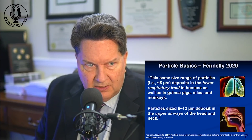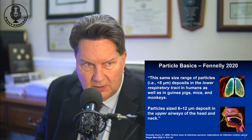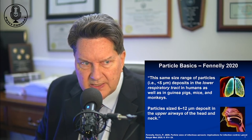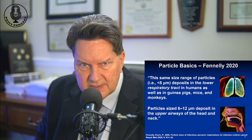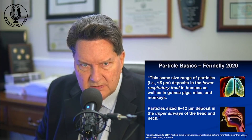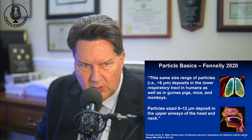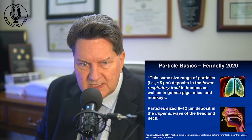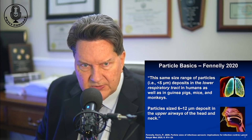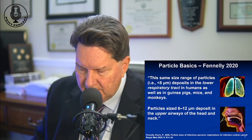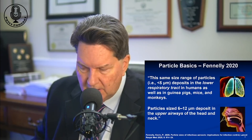Particle sizes less than a micron deposit in the lower respiratory tract in humans as well as guinea pigs, mice, and monkeys. The little guys find it much easier to avoid the body's natural mechanisms — the cilia and mucus tissues above the lungs. Whereas the big guys, 6 to 12 microns, deposit in the upper airways of the head and neck. This is why it's important to understand the difference between droplets and aerosols, because aerosols can reach deep into the lungs where they cause havoc.